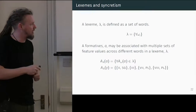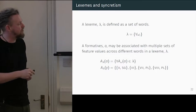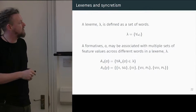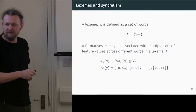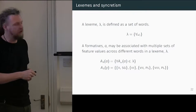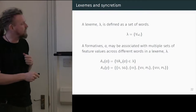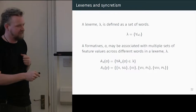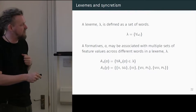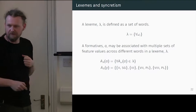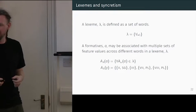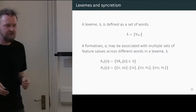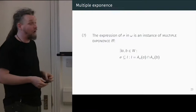A single formative might be associated with multiple sets of feature values across different words. We can define this formally: the A-lambda relation — the association at the lexeme level of the Batsby affix Y — well, remember how it was syncretic with all those values? So its A-lambda association is the set containing the set {gender 2, singular}, also the set {gender 3}, the set {gender 7, plural}, and the set {gender 8, plural}. This is the relationship of all its meanings across all the words in which it occurs.